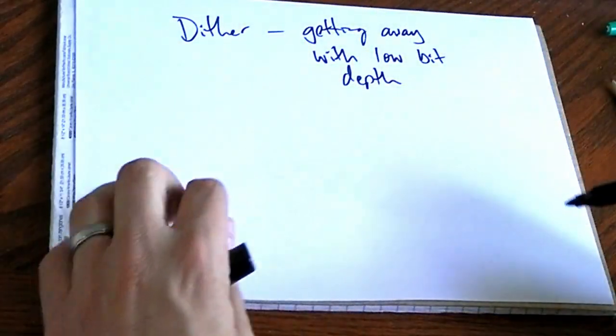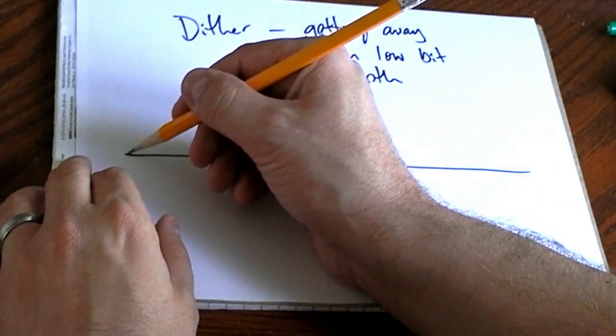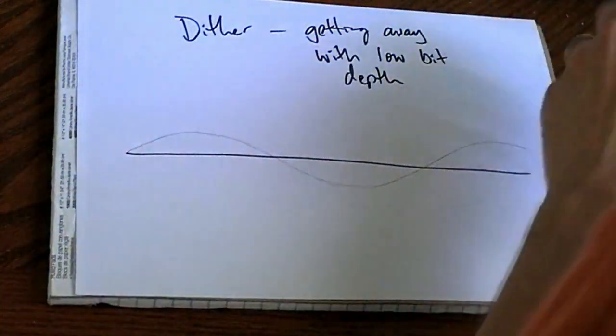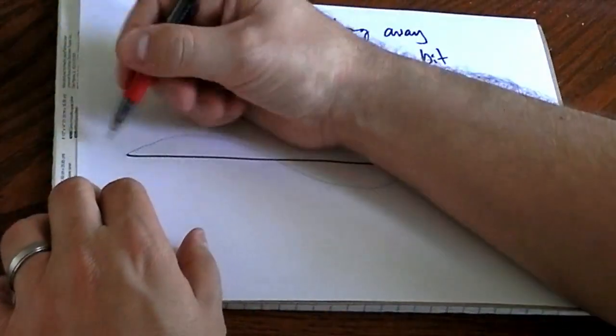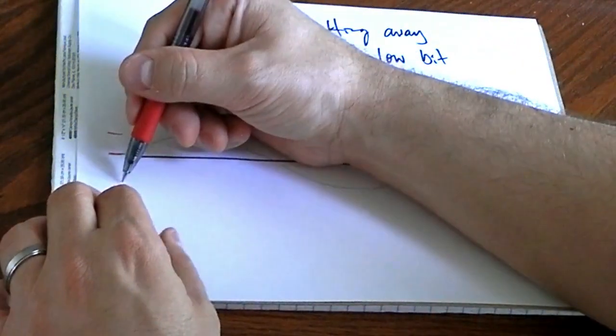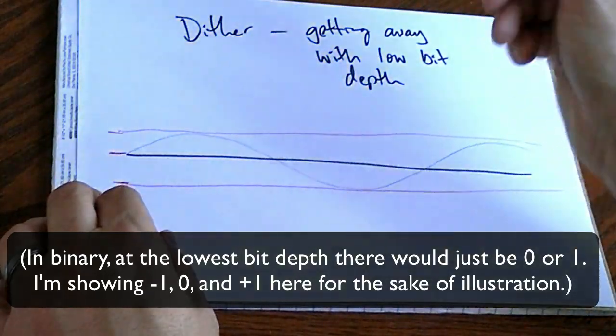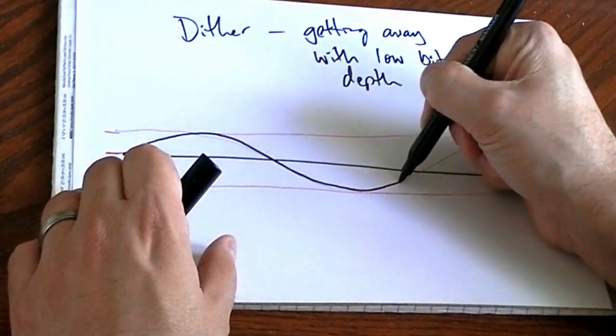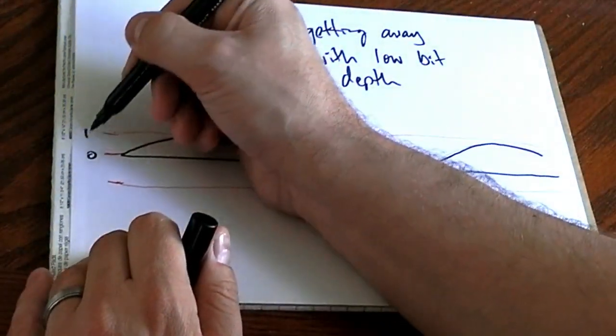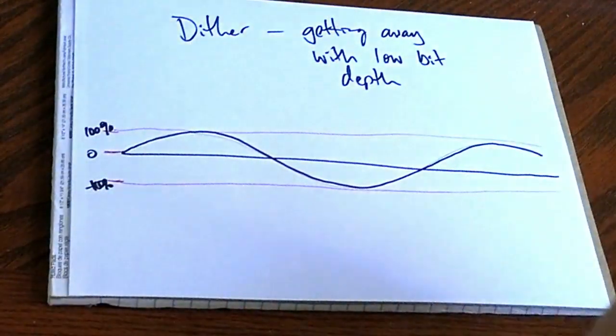Dither. Dither lets you get away with low bit depth. So let's say we've got a wave like this. And the only spots that we can measure it at are zero, positive 100, and negative 100. The most extreme example of low bit depth ever. So this is the original wave that we are trying to sample. There's zero,